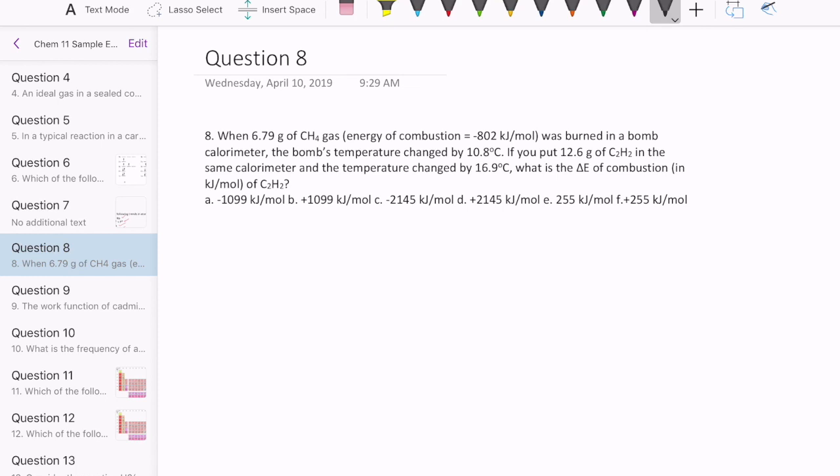So the question has two parts to it. The first part says you take 6.79 grams of methane gas and you burn it in a bomb calorimeter and then you find that the bomb has a temperature change of 10.8 degrees. And then after that, you take a different substance, C2H2 acetylene, and then you put it in that same bomb calorimeter and then the temperature changed by 16.9 degrees instead. And the question is, what's the delta E of combustion of C2H2?